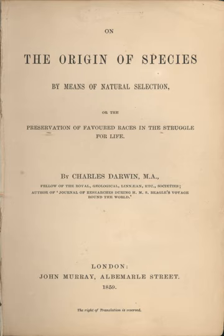As the Beagle neared England in 1836, he noted that species might not be fixed. Richard Owen showed that fossils of extinct species Darwin found in South America were allied to living species on the same continent. In March 1837, ornithologist John Gould announced that Darwin's Rhea was a separate species from the previously described Rhea, that mockingbirds collected on the Galápagos Islands represented three separate species each unique to a particular island, and that several distinct birds from those islands were all classified as finches. Darwin began speculating, in a series of notebooks, on the possibility that one species does change into another, and around July sketched a genealogical branching of a single evolutionary tree, discarding Lamarck's independent lineages progressing to higher forms.